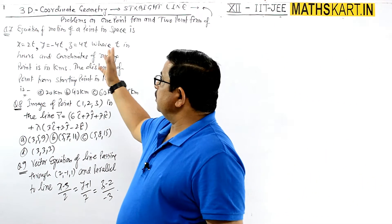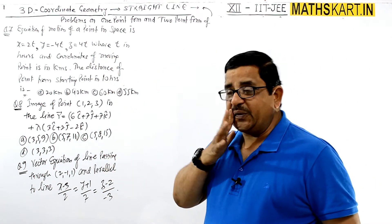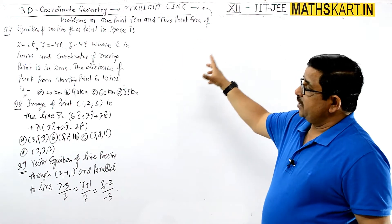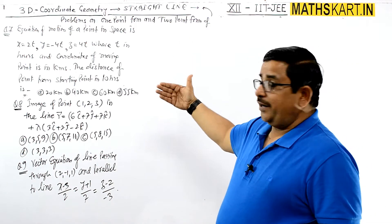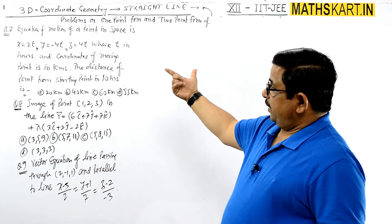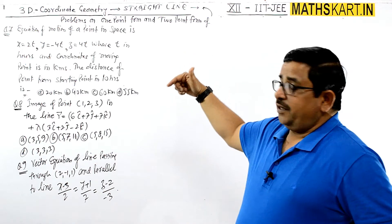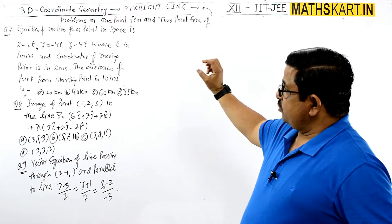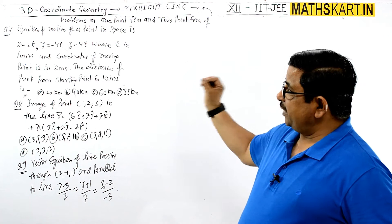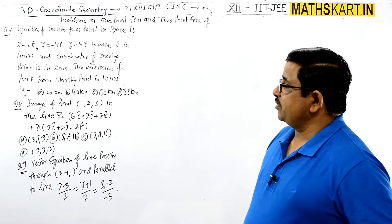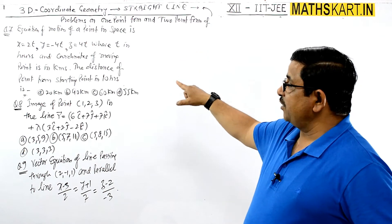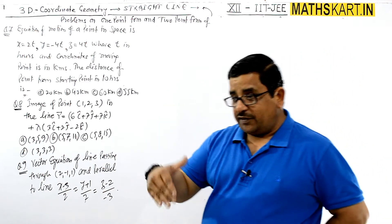Okay, three more questions on one-point form, two-point form. Question number 7: the motion of a point in space is given as x equals 2t, y equals minus 4t, z equals 4t, where t is in hours and the coordinates of the moving point are in kilometers. After 10 hours, the distance from the starting point is required.